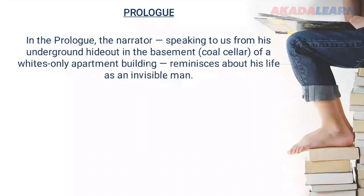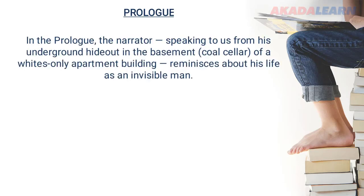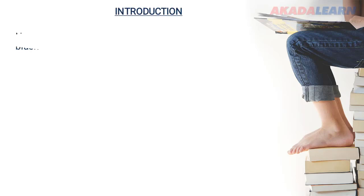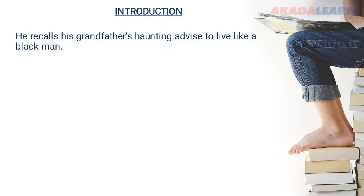In the prologue, we see the narrator speaking to us from his underground hideout in the basement — the coal cellar of a whites-only apartment building — where he is reminiscing about his life as an invisible man. It is from the prologue that we understand who the invisible man is and what he represents in the story.